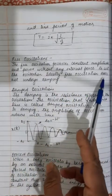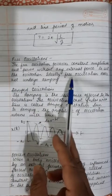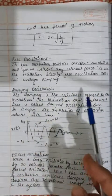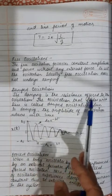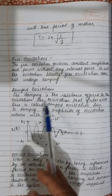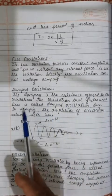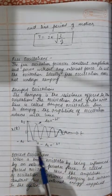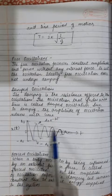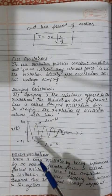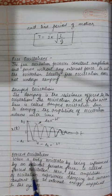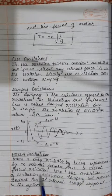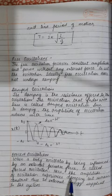Next is free oscillation. Free oscillation possesses constant amplitude and time period without any external force to set the oscillation; ideally, free oscillations do not undergo damping. Damped oscillations occur when the oscillation fades with time due to resistance. The amplitude of oscillation reduces with time, as shown in the amplitude-versus-time graph for damped oscillations.